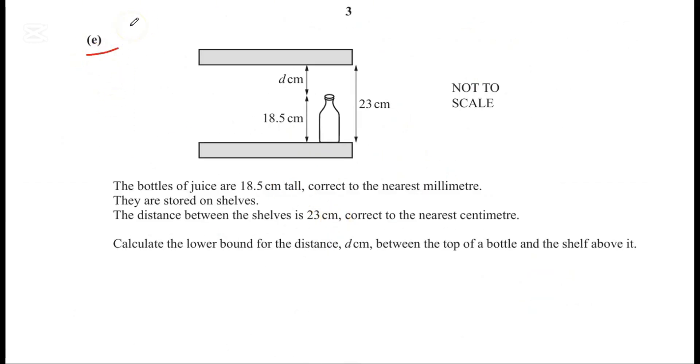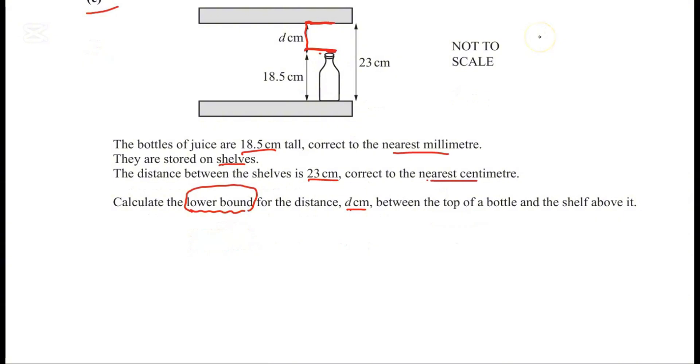Question part E. The bottles of juice are 18.5 centimeters tall, correct to the nearest millimeter. They are stored on shelves. The distance between the shelves is 23 centimeters, correct to the nearest centimeter. Calculate the lower bound for the distance d centimeters between the top of a bottle and the shelf above it. Since we're calculating the lower bound of distance d, I need the upper bound of the bottle and the lower bound of the shelf above it.